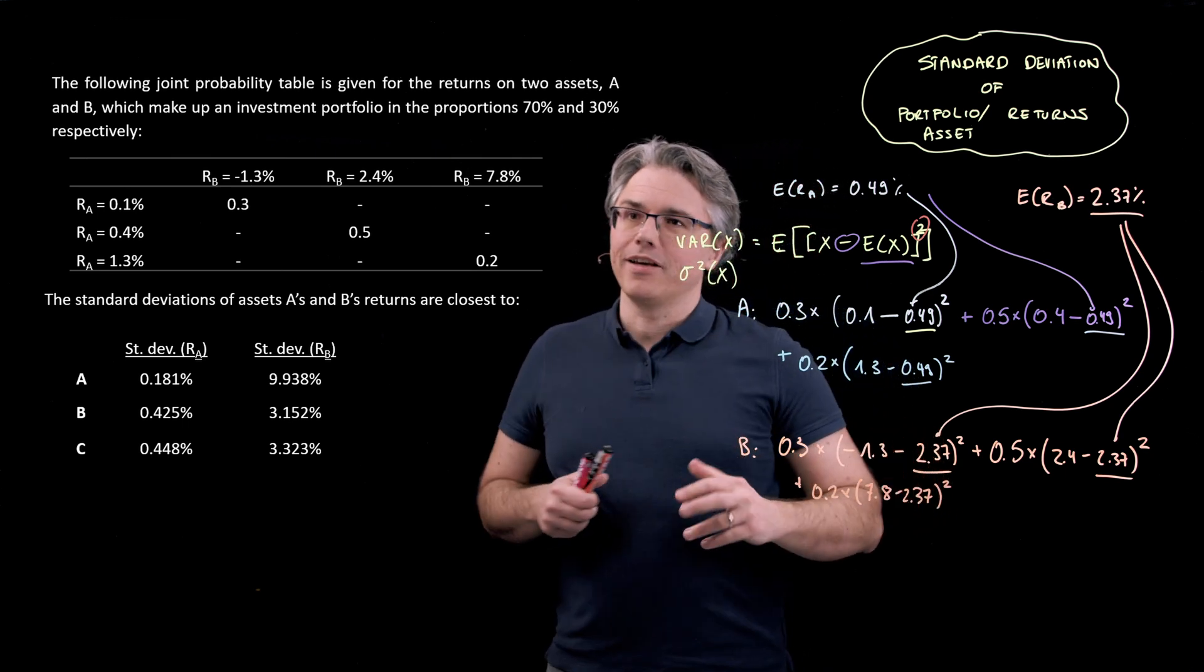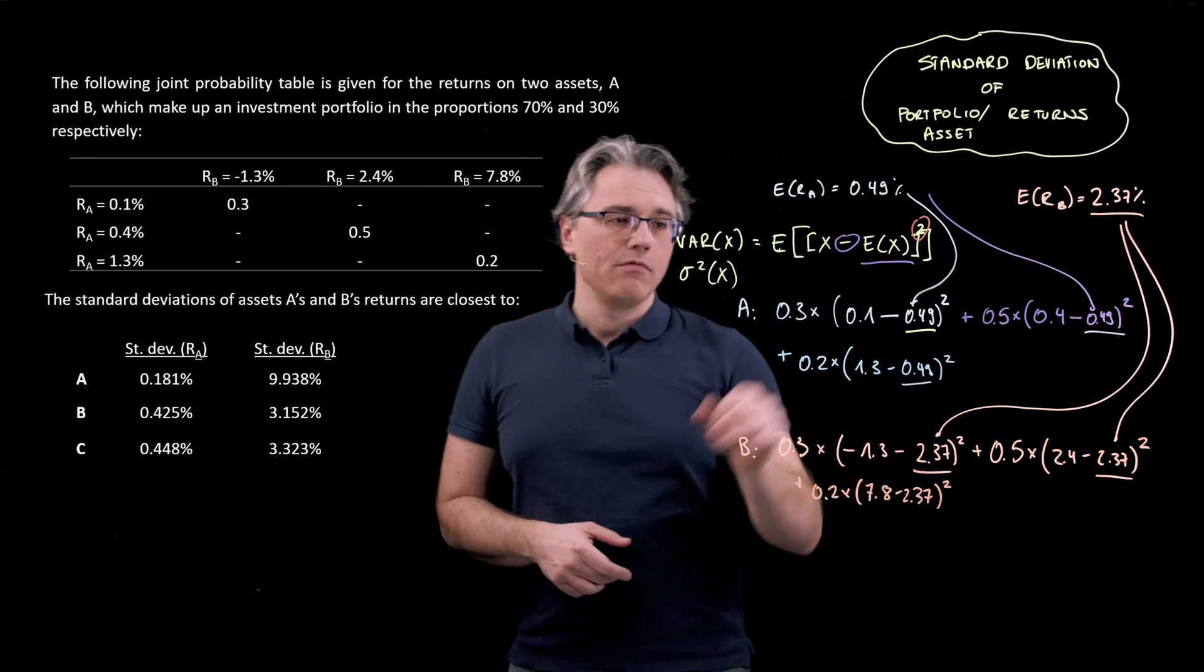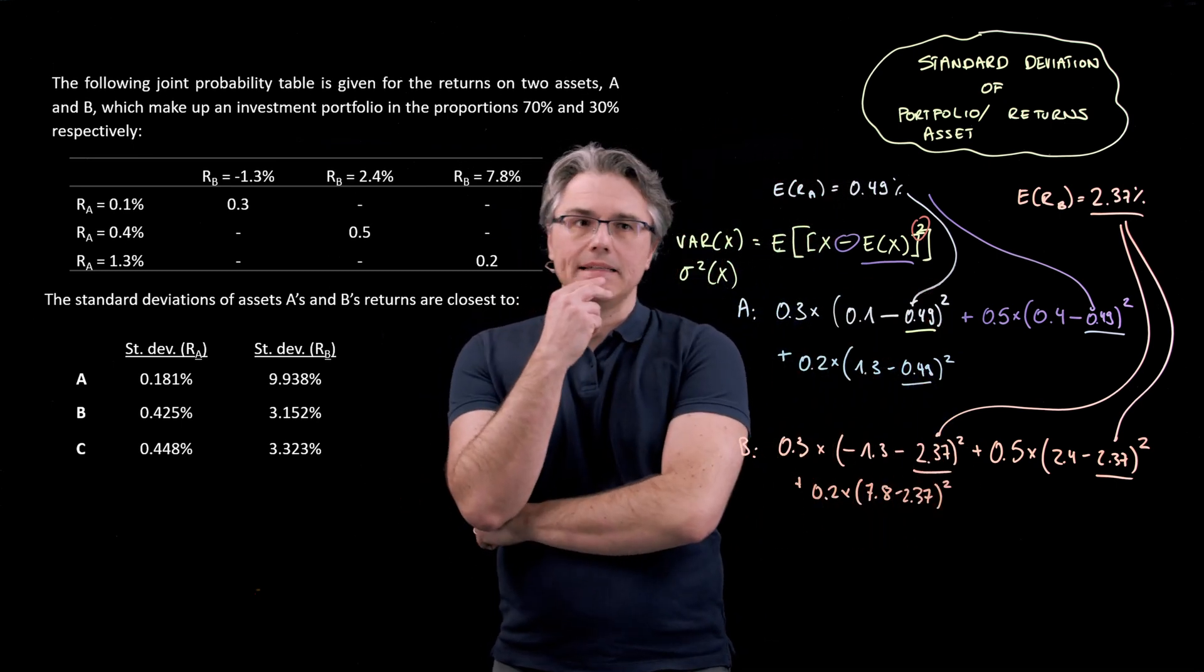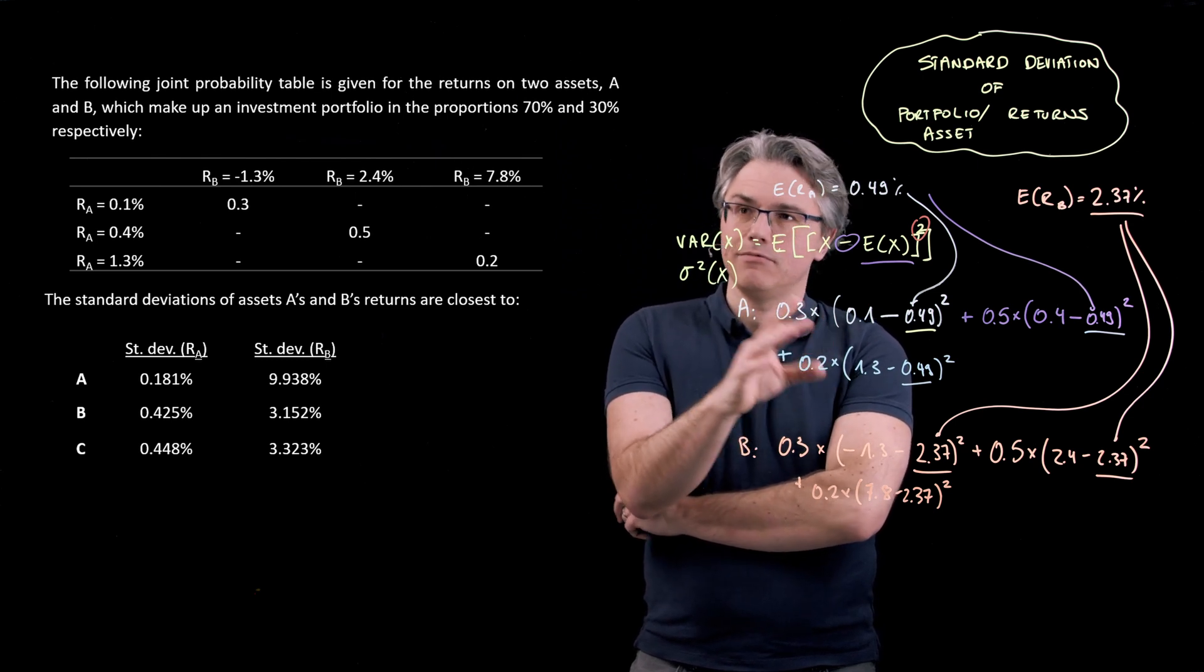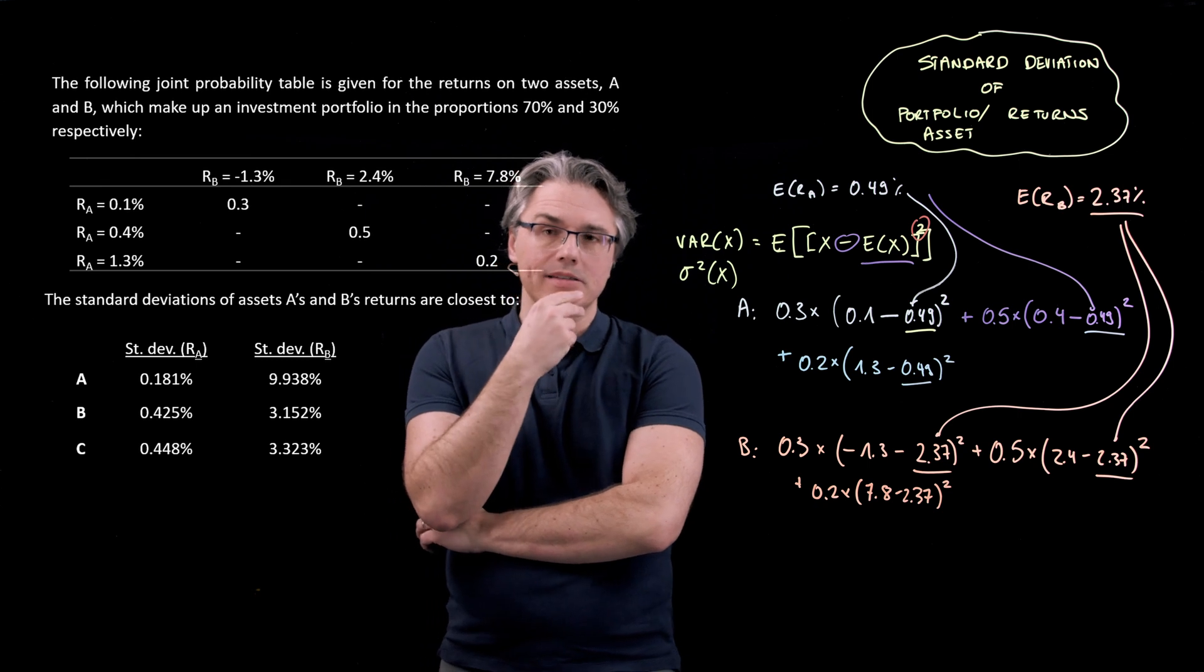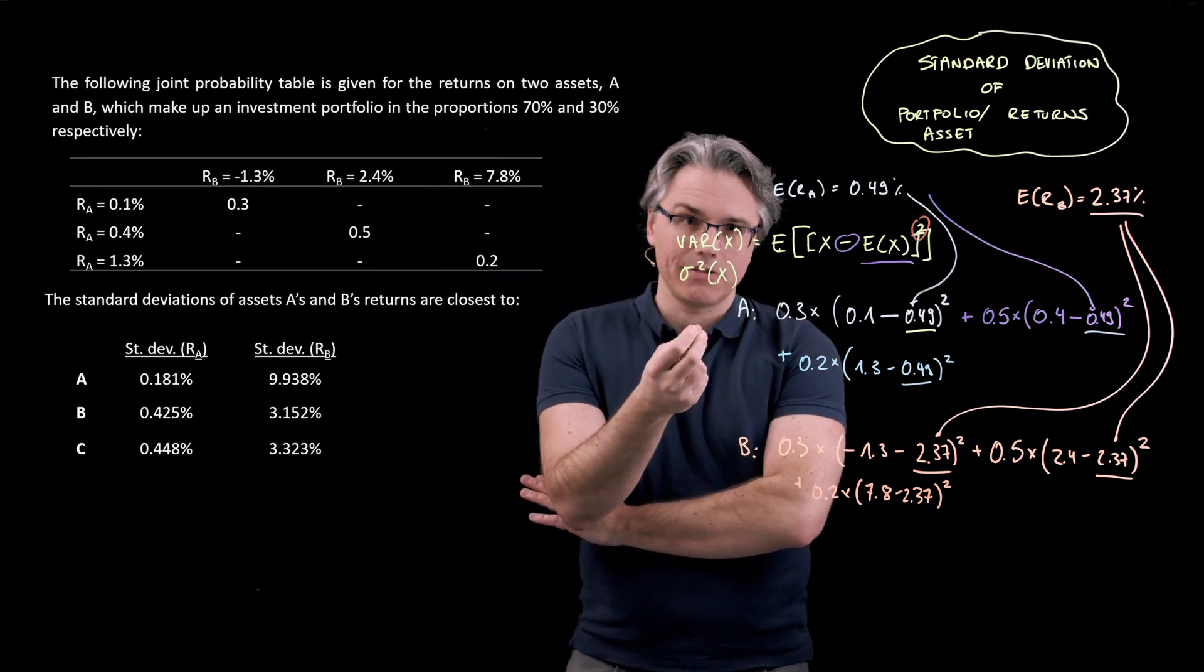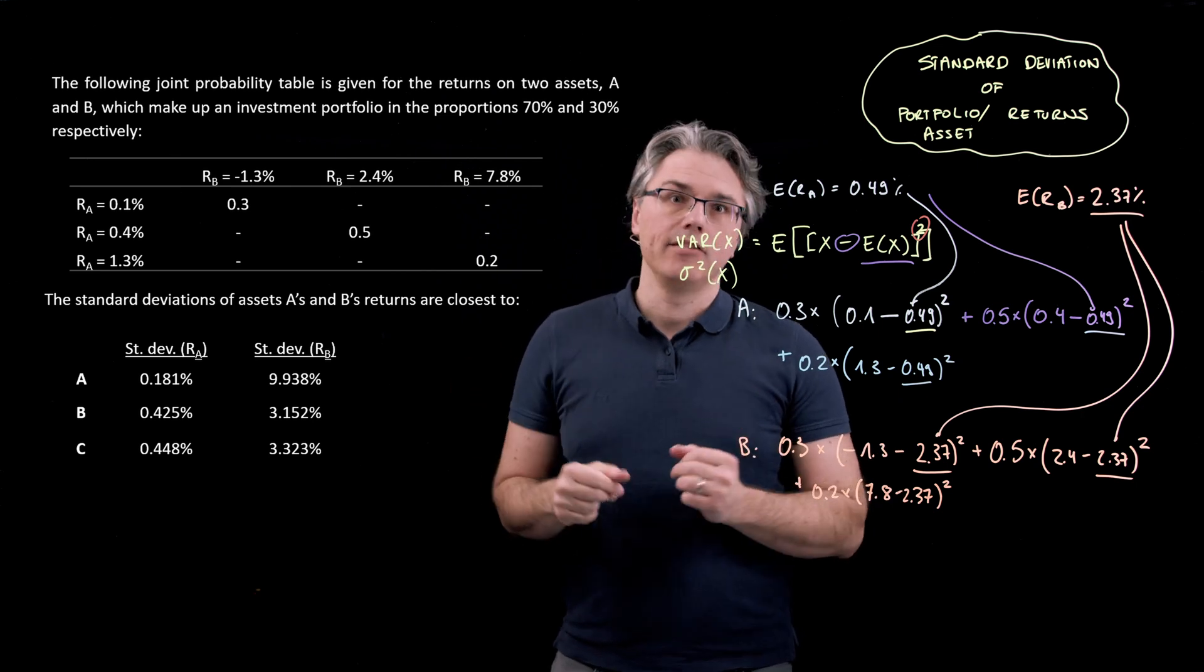And before I fire up my calculator and perform these computations, let me emphasize that because what we've got in the brackets here is expressed in percentages, we will get, which is quite characteristic for variance, at least the variance of portfolio or asset returns, a result which is also expressed in percentages, but squared. OK, let's go to the calculator.